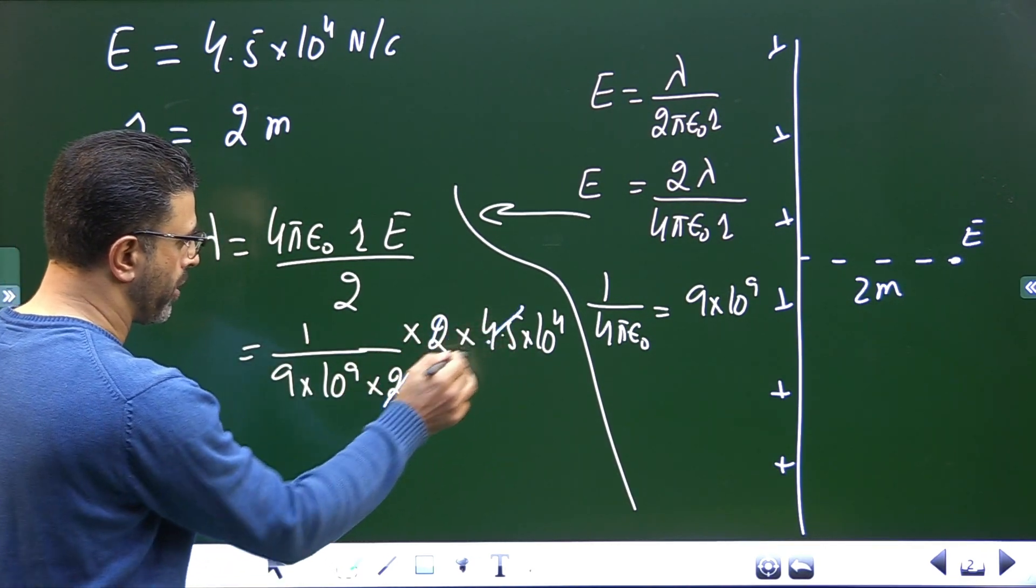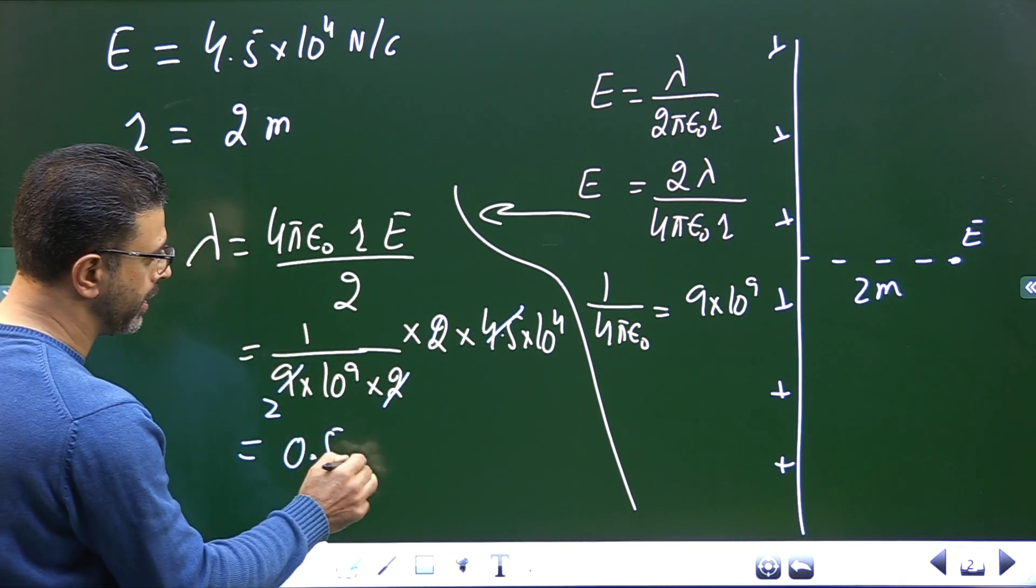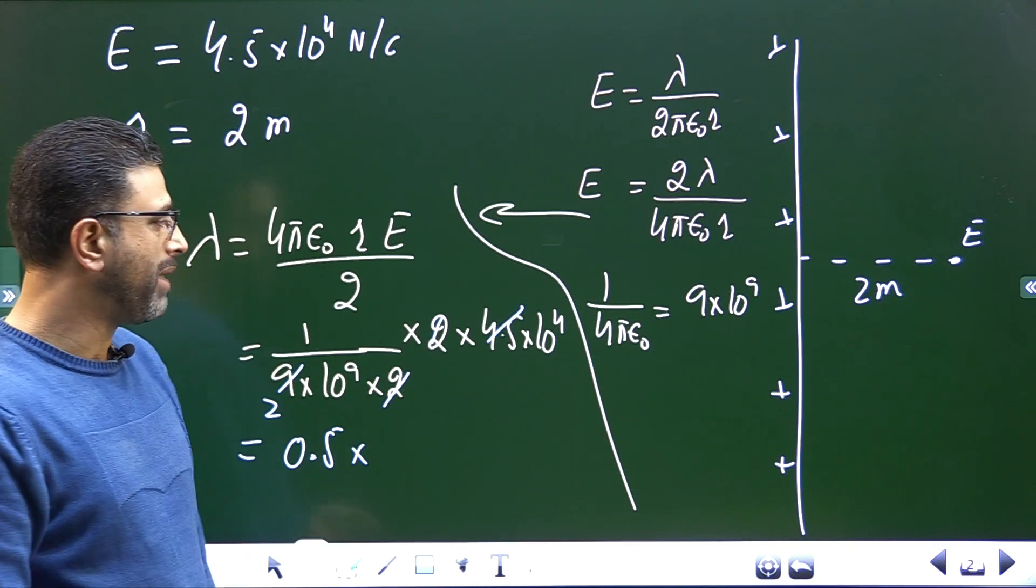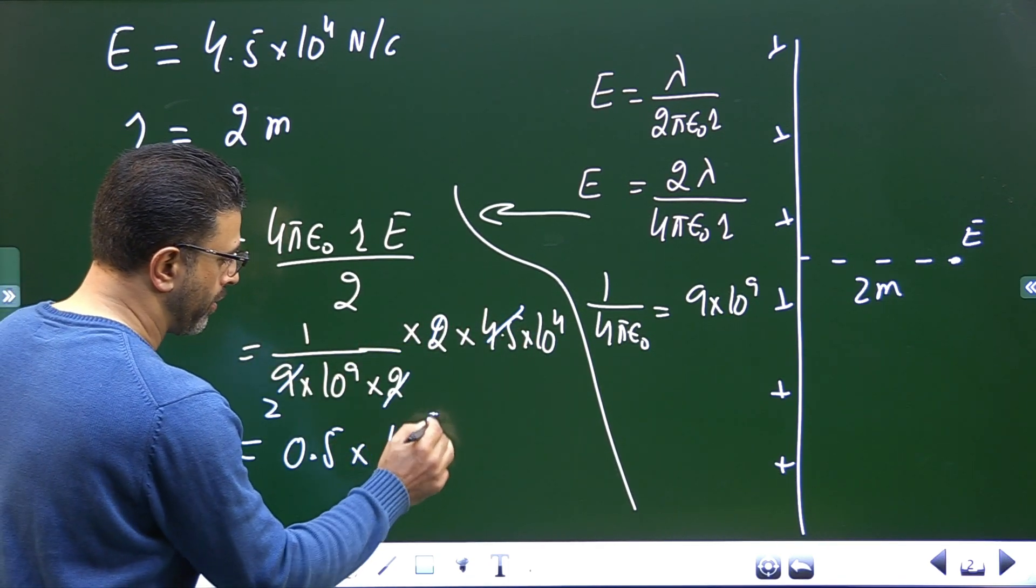Simple. 2 and 2 cancels out, 4.5 into 2 is 9, so 1 by 2 is 0.5. Into 10 to the power 9 will go upstairs, so it will become 10 to the power minus 9. Minus 9 plus 4 is minus 5, so 10 to the power minus 5.